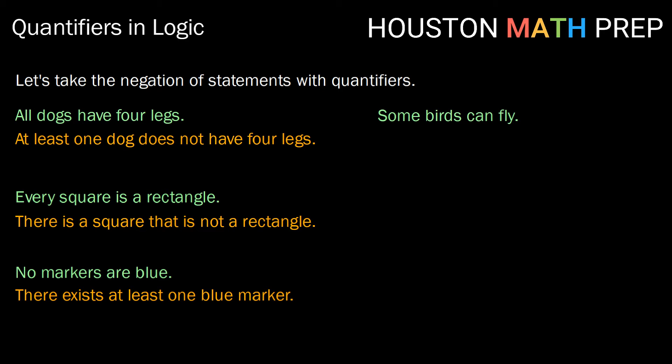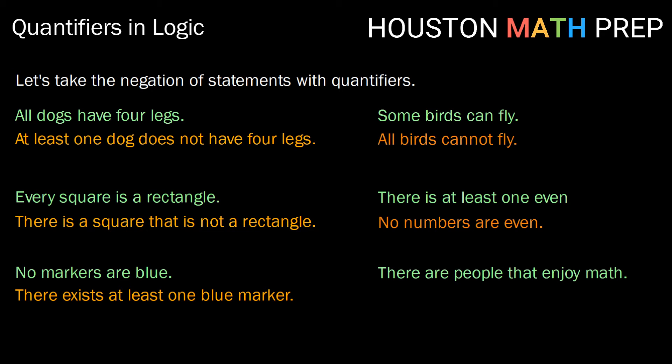If we take some birds can fly, and we think about what is the opposite of that, we could say all birds cannot fly. Or maybe you might write that as no birds can fly. So here, the opposite of an existential quantifier is a universal quantifier. There is at least one even number. Well, no numbers are even is the opposite there. There are people that enjoy math. The negation of that would be no people enjoy math.